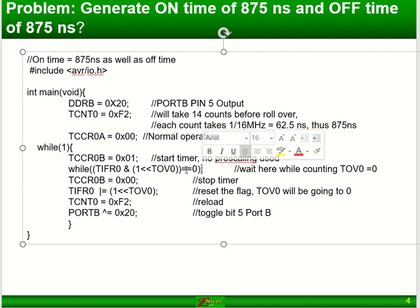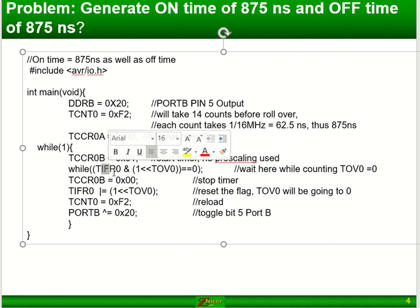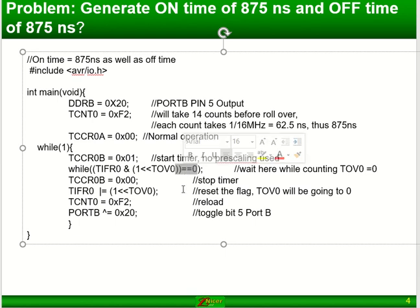As long as TOV0 is 0, I will sit and wait here. As soon as there's a rollover, inside this interrupt flag, bit number 0 which is the TOV bit will change to a 1. That means this is not true anymore, it's not equal to 0 anymore, it will become false, the statement, and it will jump to this line here.